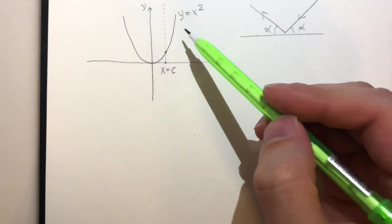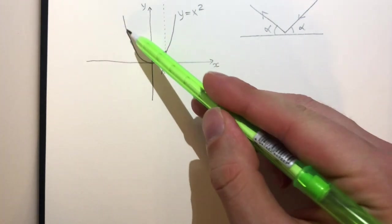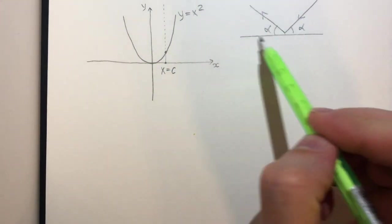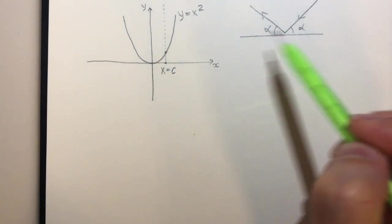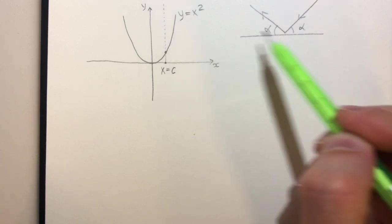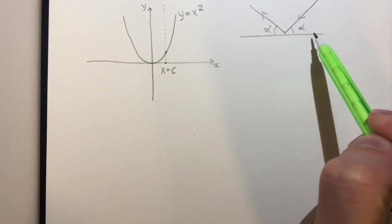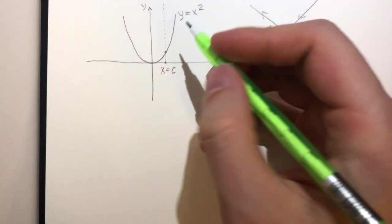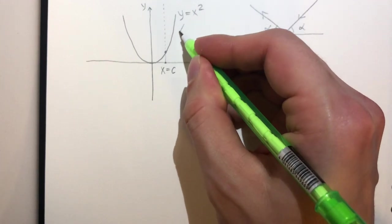The problem is, though, that our surface here is a parabola. It is not a straight line. But since we are considering a reflection at a specific point, we can understand what this flat surface is. And of course, it's going to be tangent at that point.